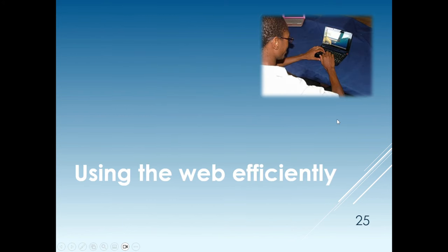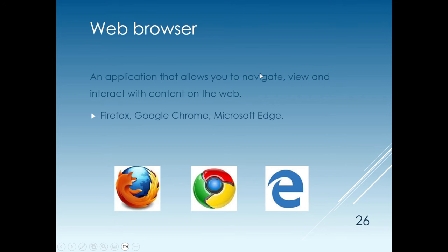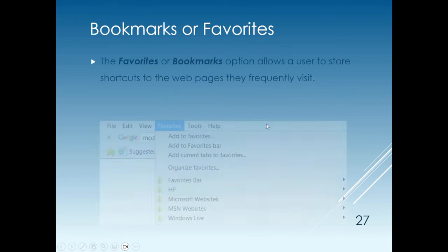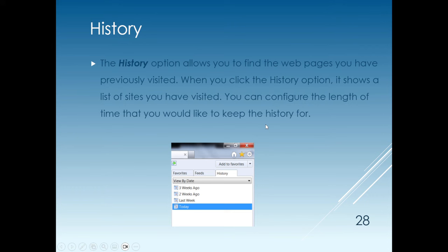Now, using the web efficiently — at this stage you should know the difference between a web browser and a website. A web browser is a piece of software — a program or application — that allows you to navigate, view, and interact with content on the web. Examples include Mozilla Firefox, Google Chrome, Internet Explorer, and Microsoft Edge.